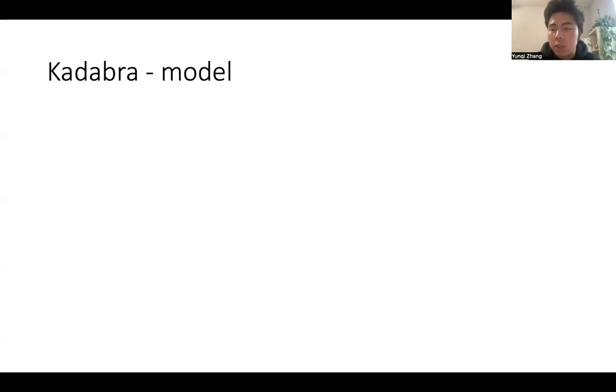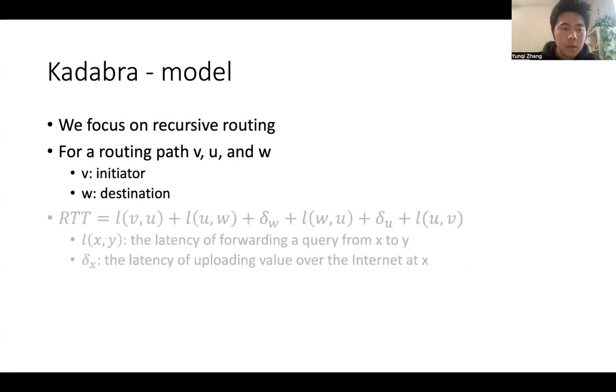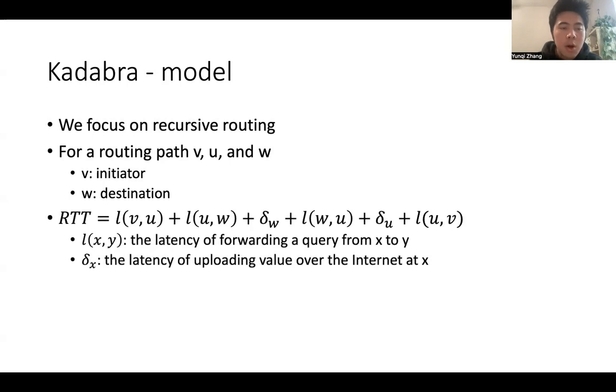Before we discuss the evaluation of Cadabra, let's show the model. We focus on recursive routing because it's more common. For a routing path, V, U, and W. And V is the initiator, W is the destination. Here is how we measure the RTT. L of xy is the latency of forwarding a query from x to y. Delta x is the latency of uploading value over the internet at node x.